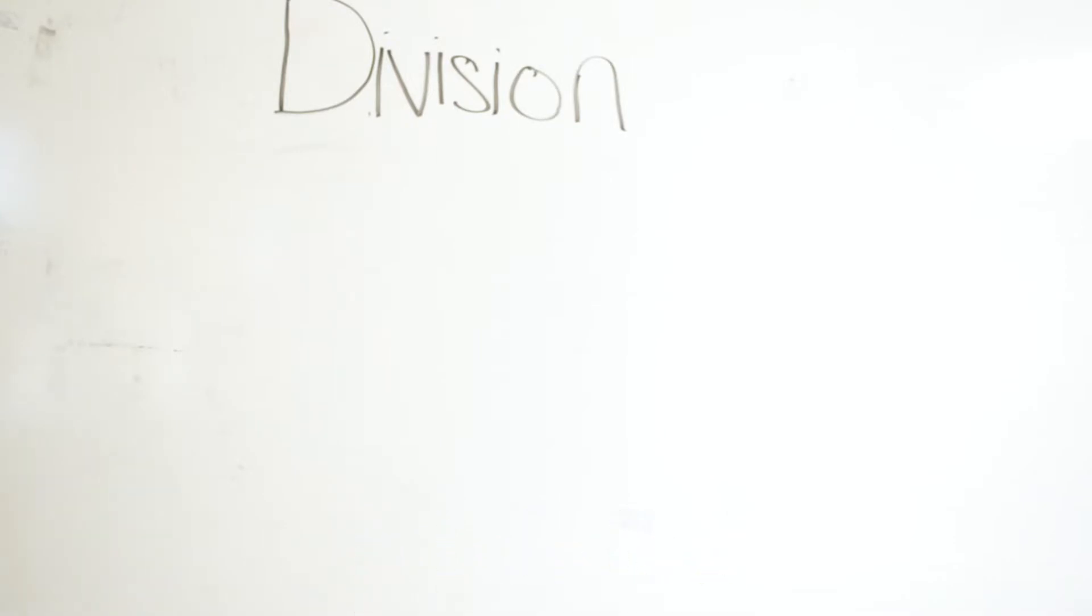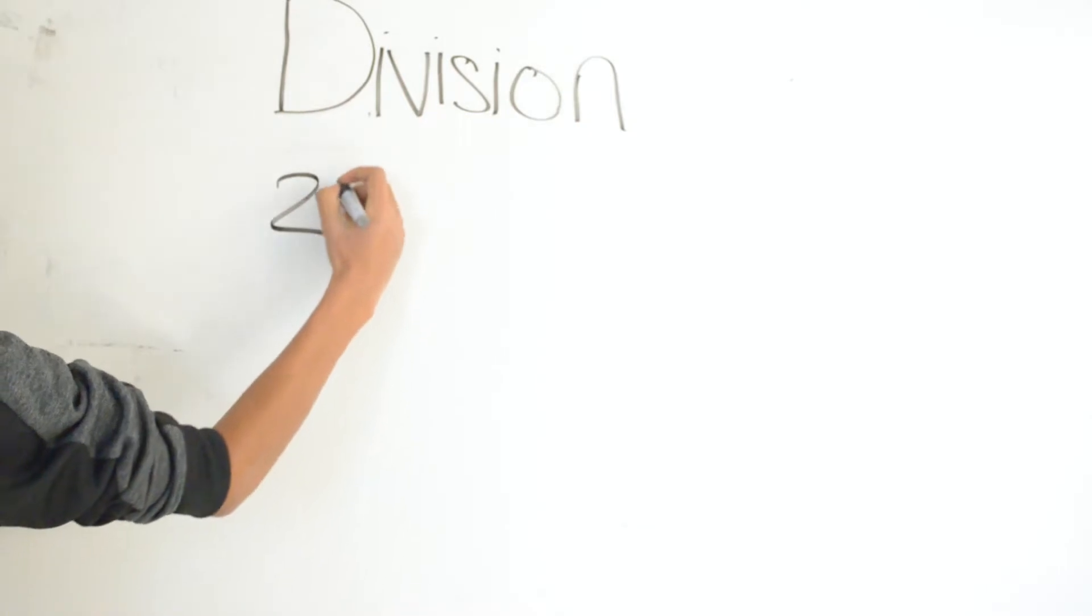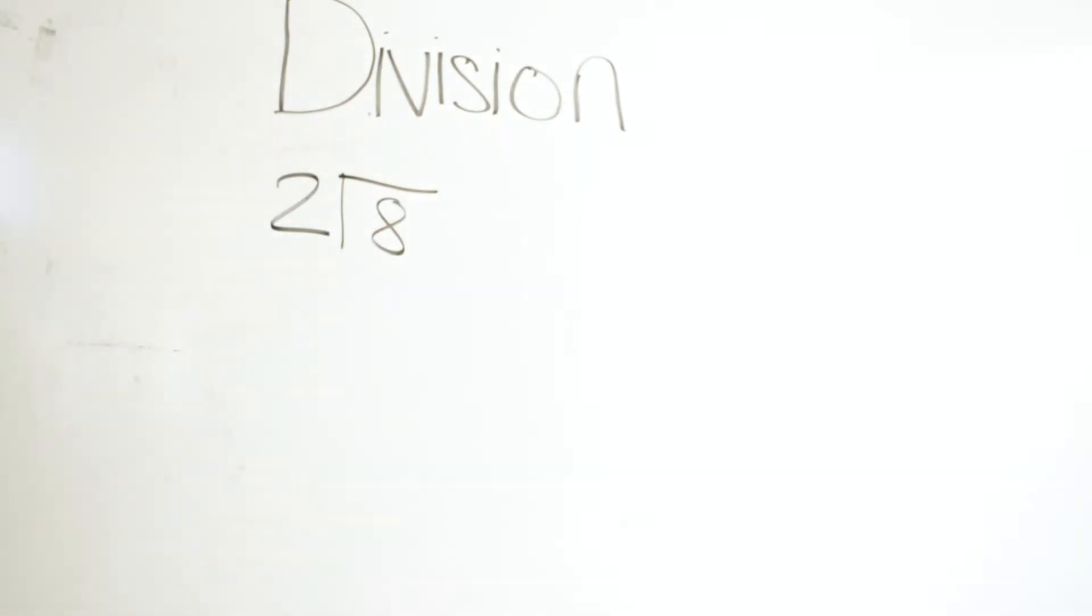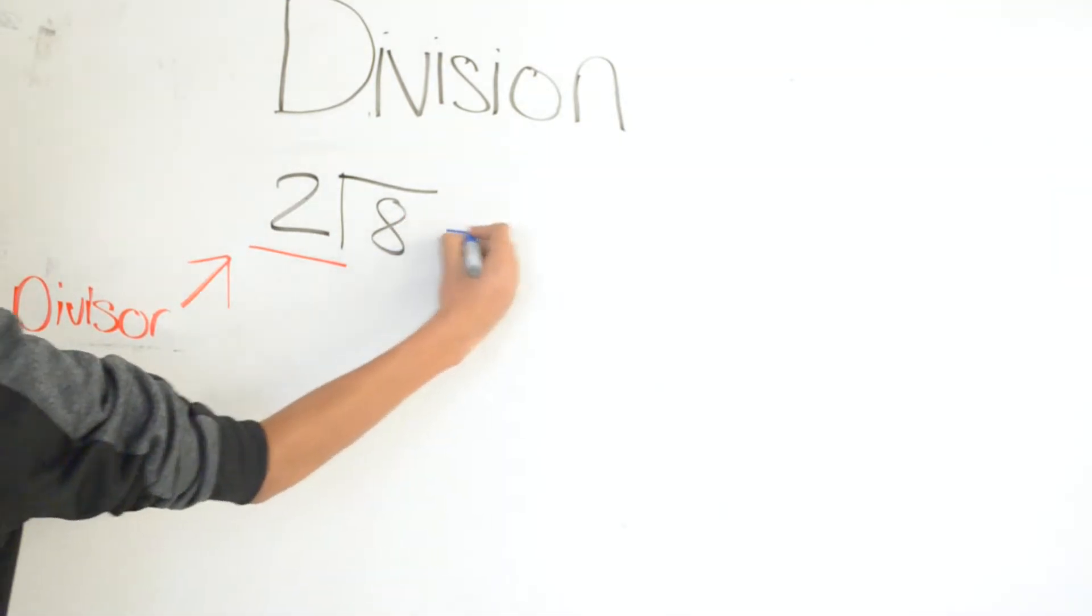For our first example we have 2 divided by 8. The 2 is our divisor and the 8 is our dividend.